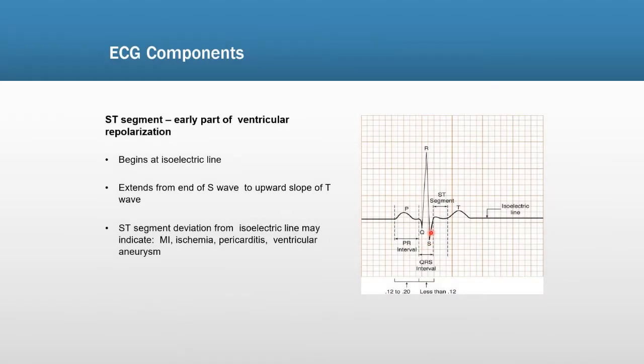Let's review the ST-Segment. The ST-Segment represents the early part of ventricular repolarization. It begins at the isoelectric line and extends from the S-Wave to the upward slope of the T-Wave.